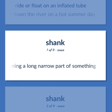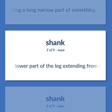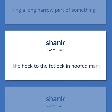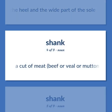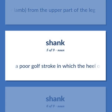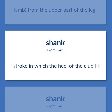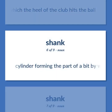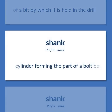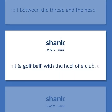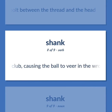Stem/Shank: cylinder forming a long narrow part of something. Lower part of the leg extending from the hock to the fetlock in hoofed mammals. The narrow part of the shoe connecting the heel and the wide part of the sole. A cut of meat — beef, veal, mutton, or lamb — from the upper part of the leg. A poor golf stroke in which the heel of the club hits the ball. Cylinder forming the part of a bit by which it is held in the drill. Cylinder forming the part of a bolt between the thread and the head. Hit a golf ball with the heel of a club, causing the ball to veer in the wrong direction.